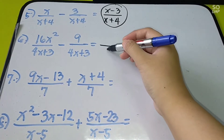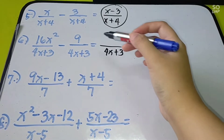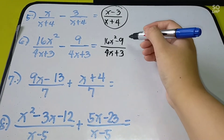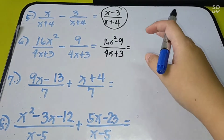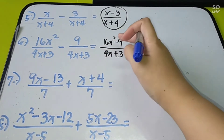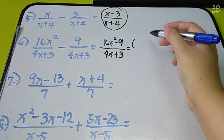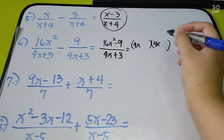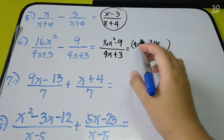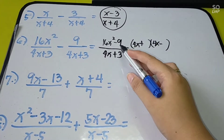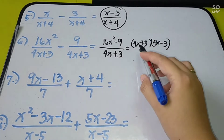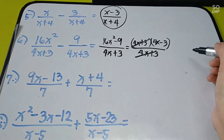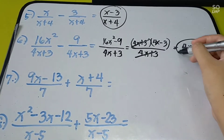Number 6. Same denominator again — copy x plus 3. Combine to get 16x squared minus 9. Since 16x squared minus 9 has no common factor but is a difference of two squares, we apply factoring. The square root of 16x squared is 4x, and the square root of 9 is 3. So we get (4x plus 3)(4x minus 3) over (4x plus 3). Cancel 4x plus 3, leaving the final answer as 4x minus 3.